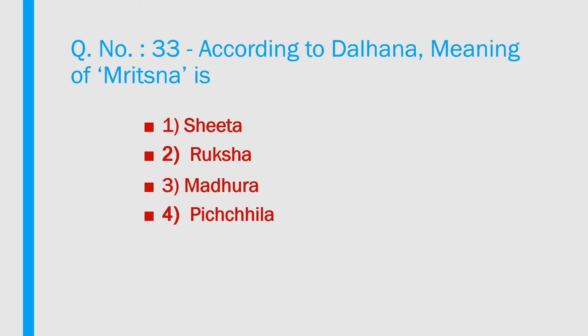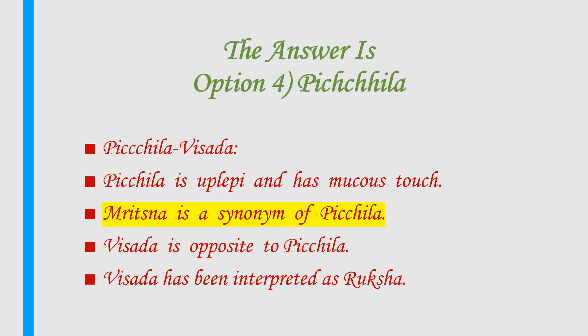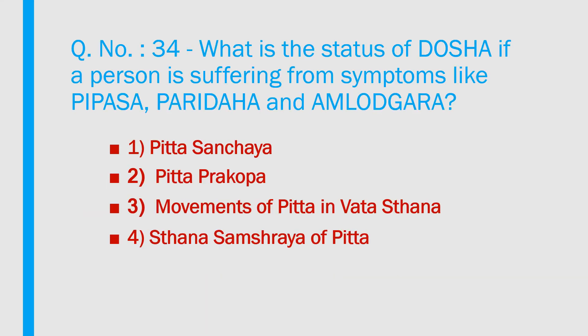Question number 33: According to Dalhana, the meaning of mritsana is: 1) Shida, 2) Rukhsha, 3) Madhura, 4) Pichila. Answer is option 4 — Pichila. Pichila vishada; pichila is upalebhi and has a mucus touch. Mritsana is a synonym of pichila. Vishada is opposite to pichila and has been interpreted as rukhsha.